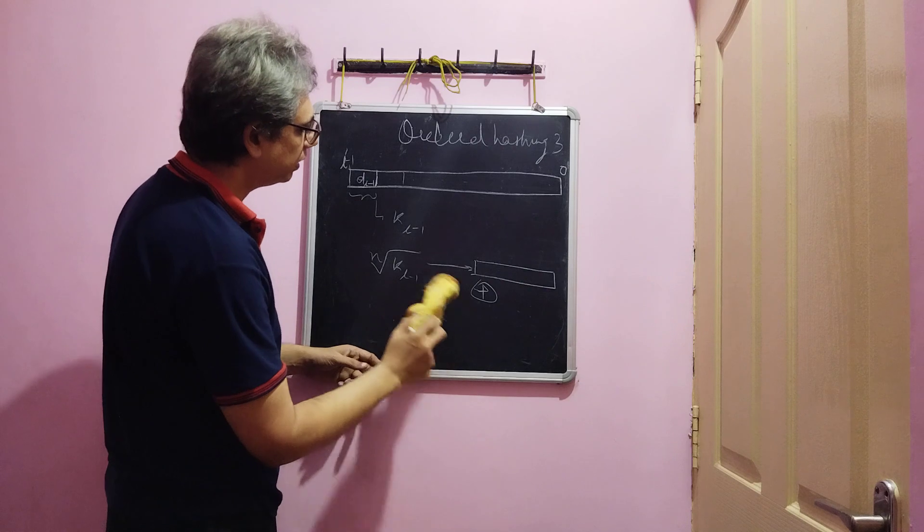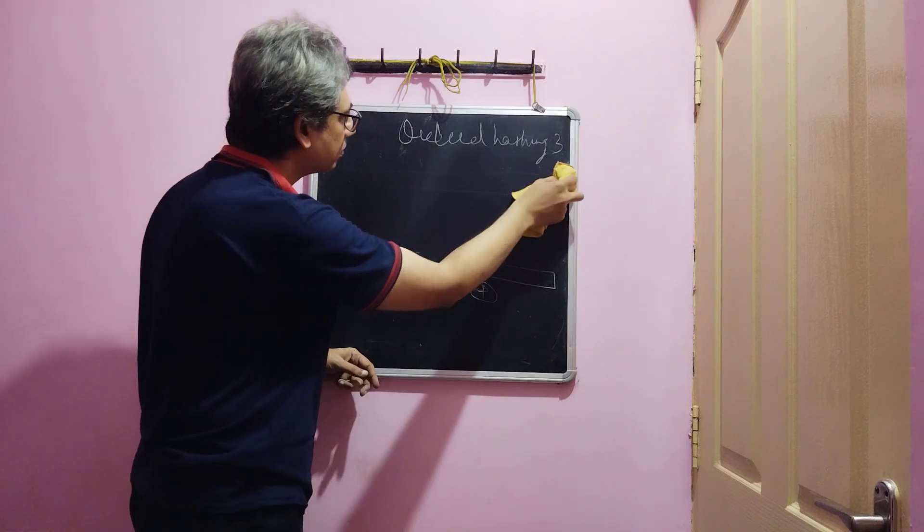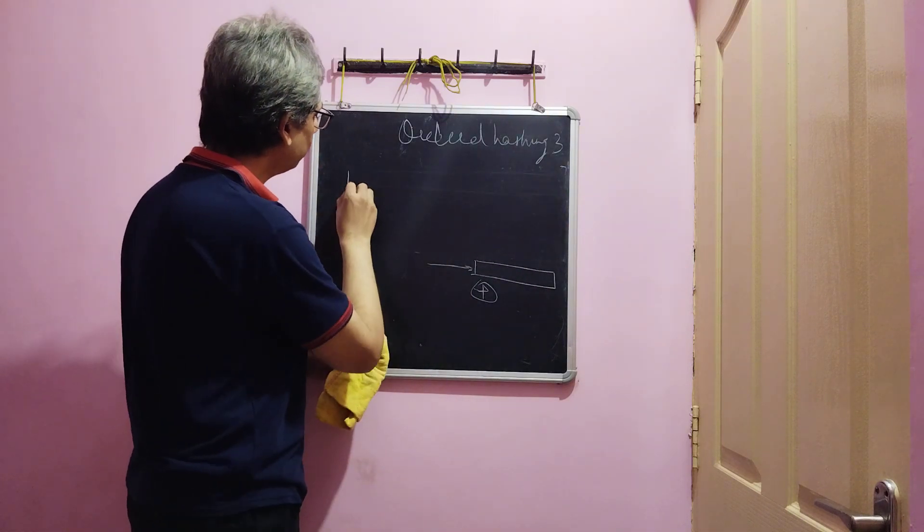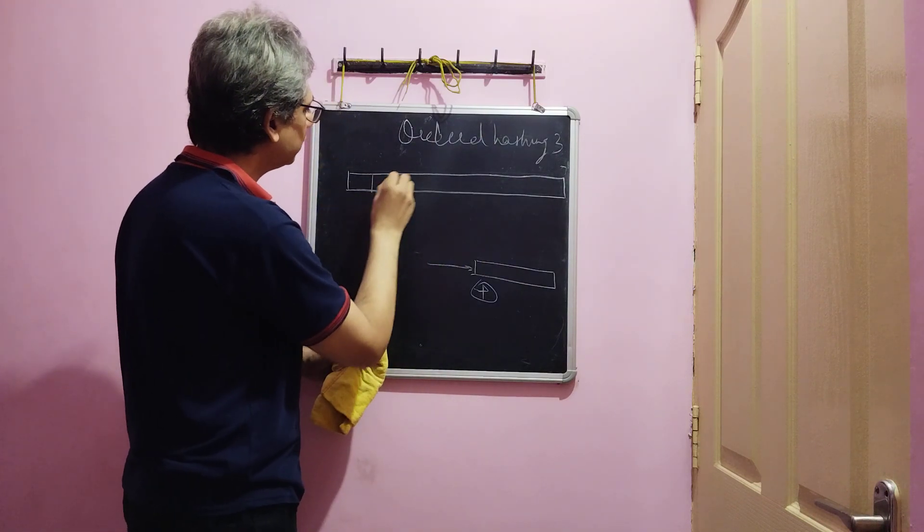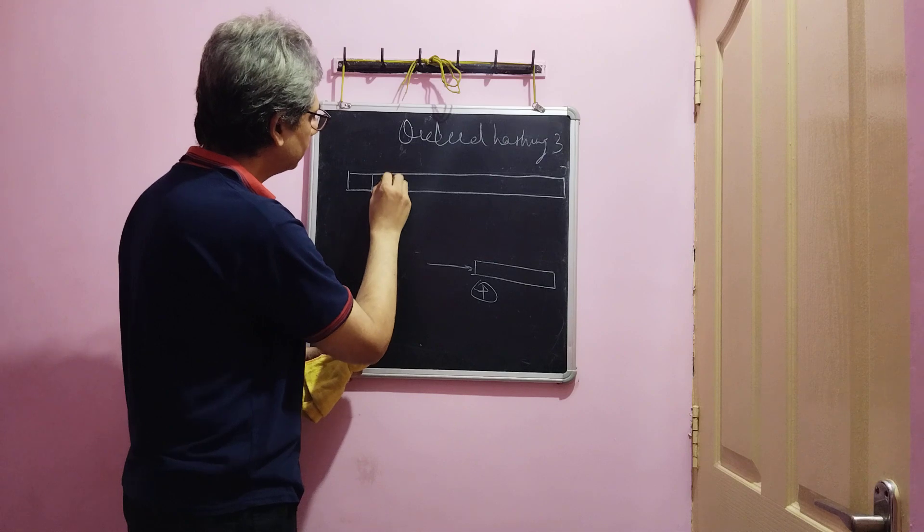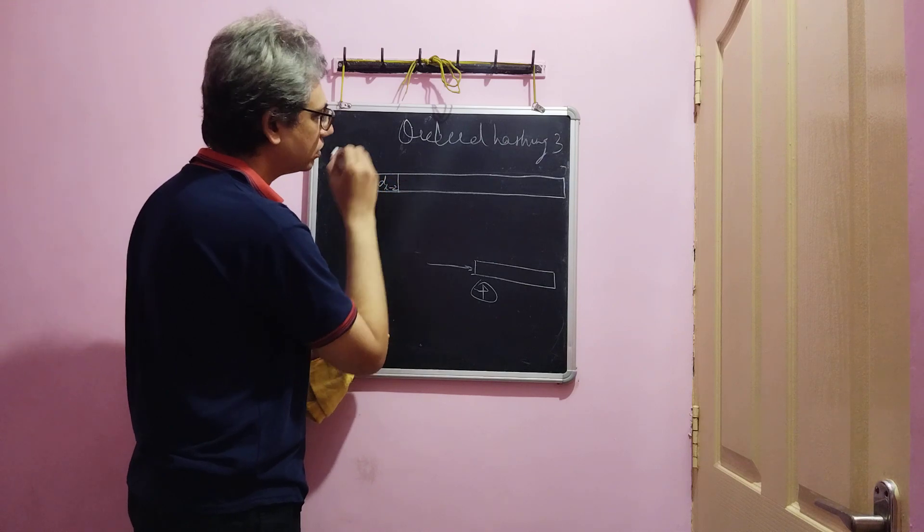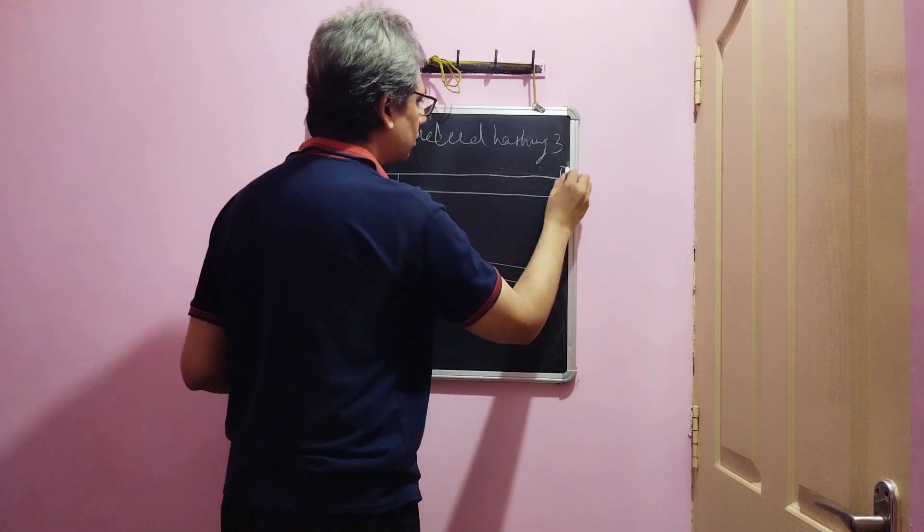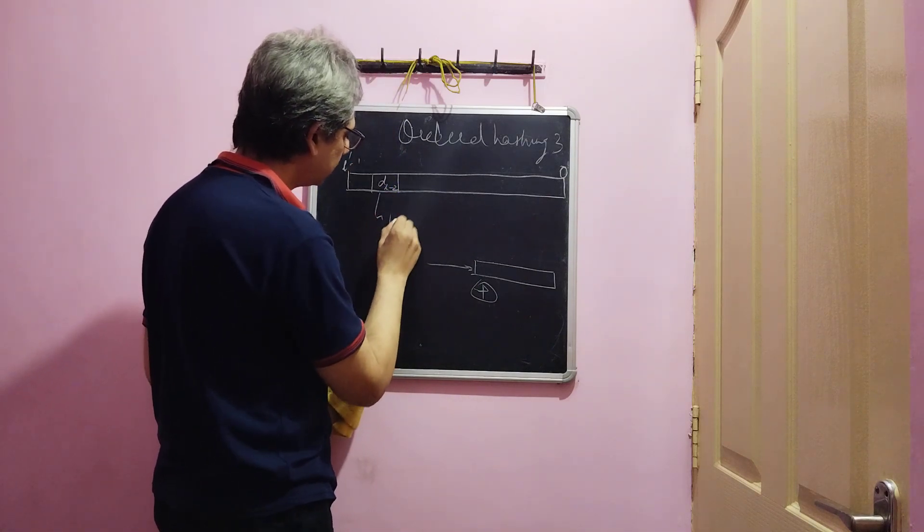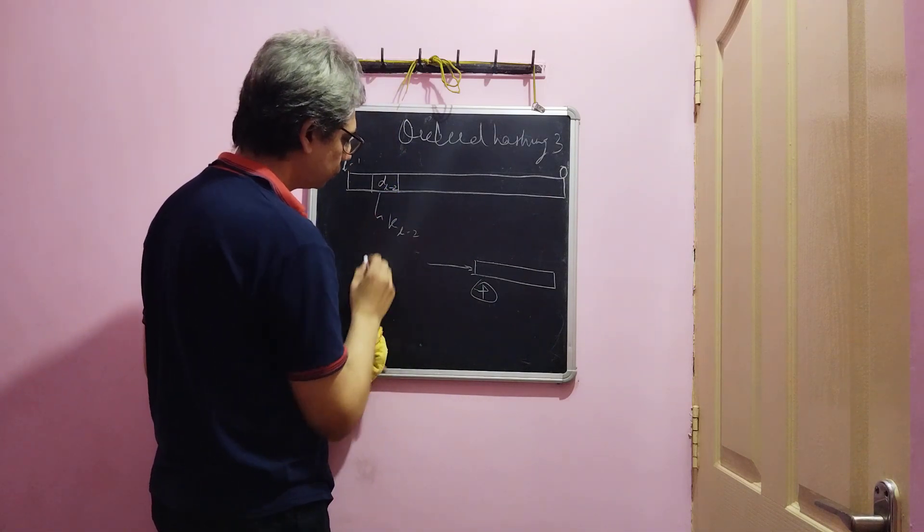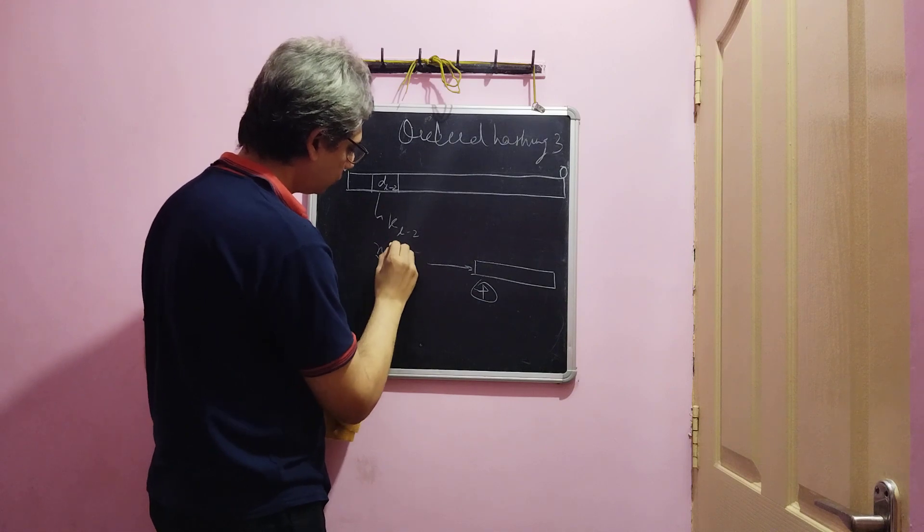Next in the next step, the same key, same information, now we take the next n bits here. Suppose it's d_l-2. Again l dash minus 1, this one, let us call it k_l-2. Again we take the nth root of this and we add it again.